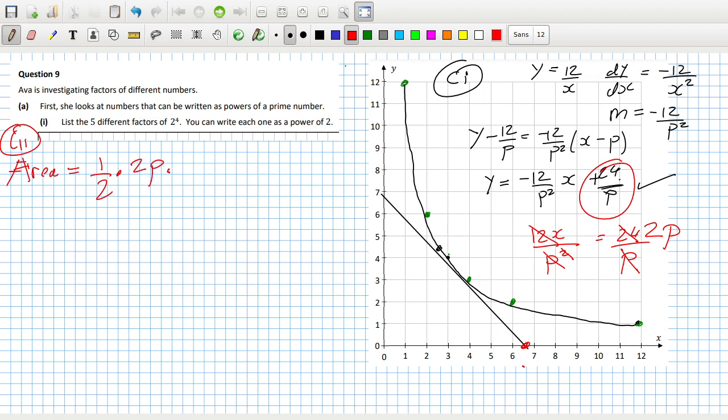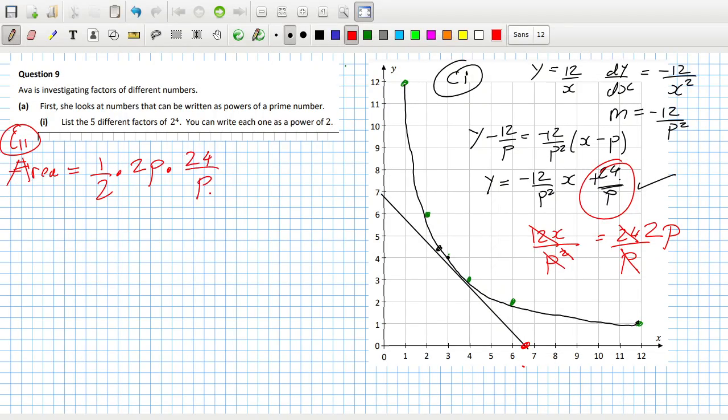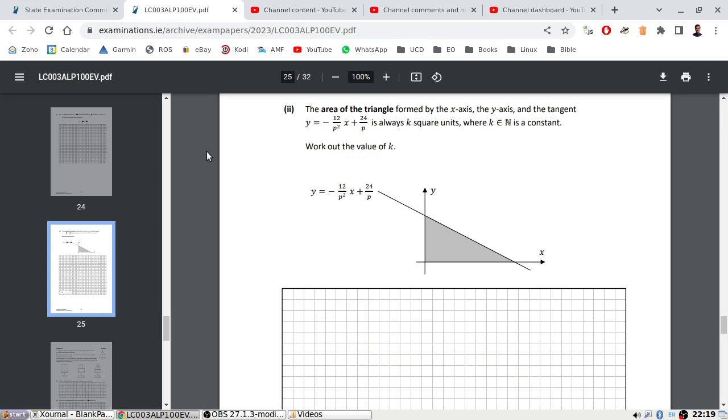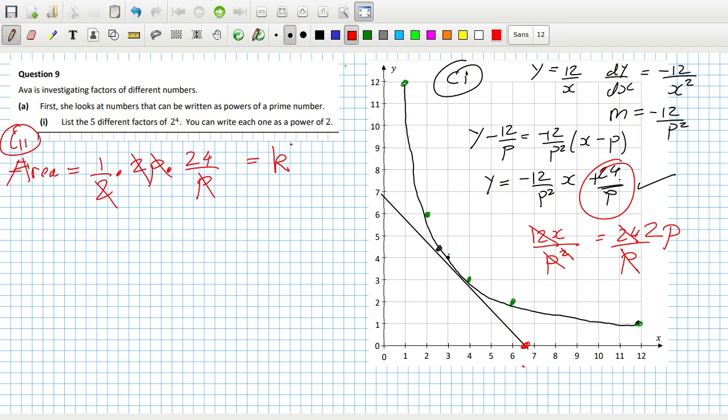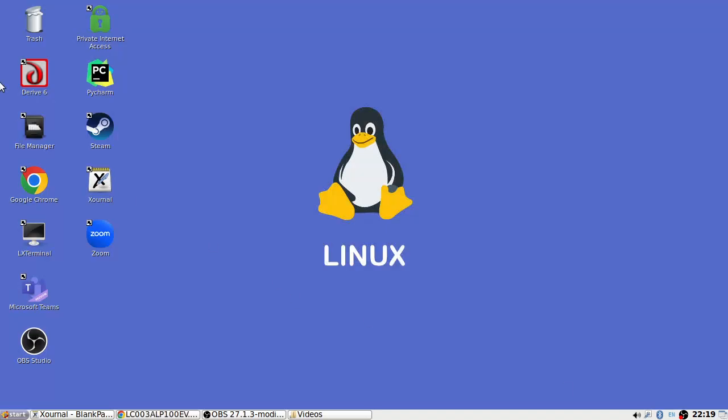So a half the base, which is 2p, times the height - when x is 0, the height is 24/p. The 2s cancel and the p's cancel, there's 24. But it's always k square units where k is a natural number. Work out the value of k. It's not a natural number? So what has gone wrong? Maybe math software time.